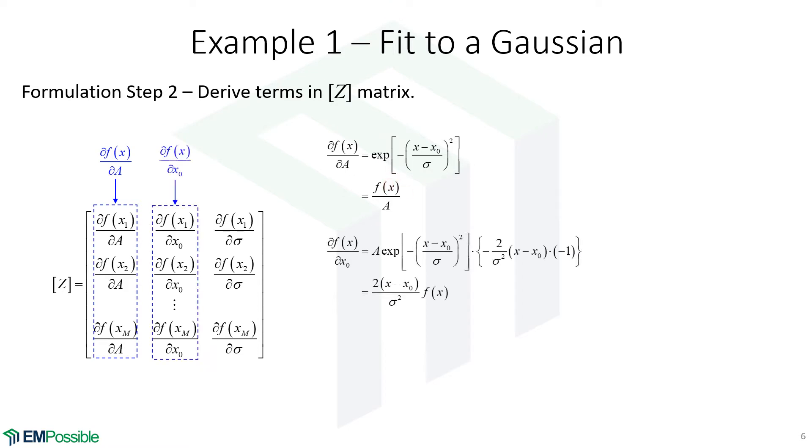Now we have the partial derivative with respect to X0. A little bit more work here, but in the end, we're left with this function multiplying our original function. And last, with respect to sigma, similar work here. Similar looking expression, a little bit different, multiplying our original function.